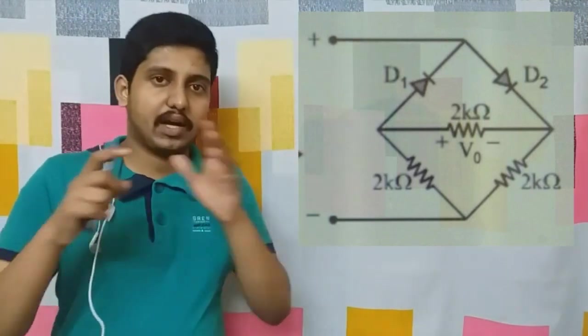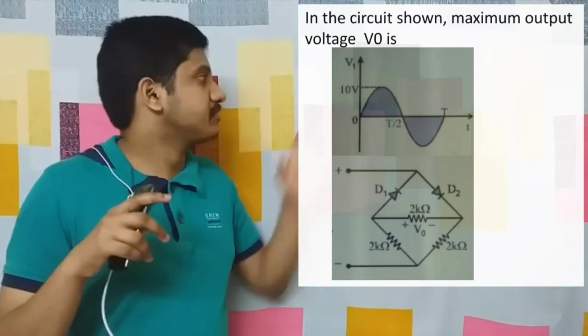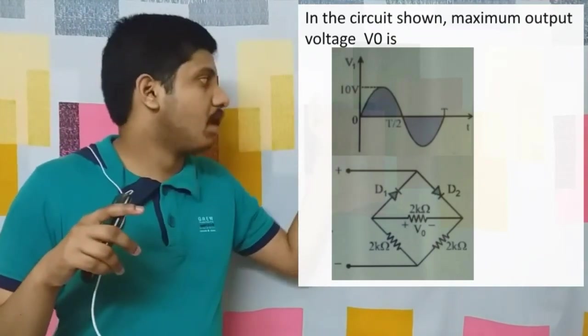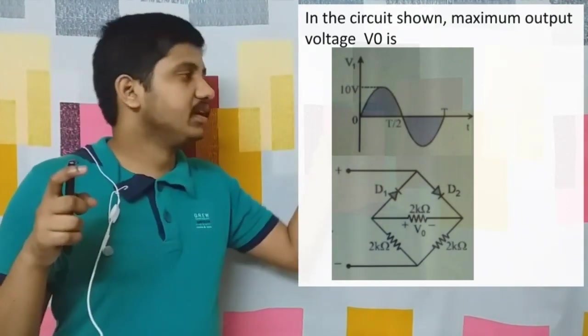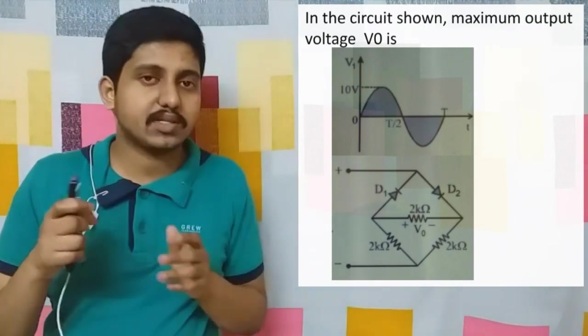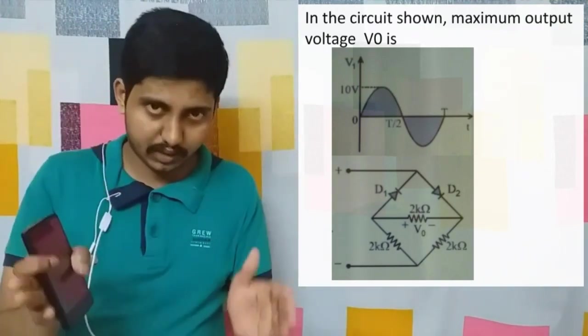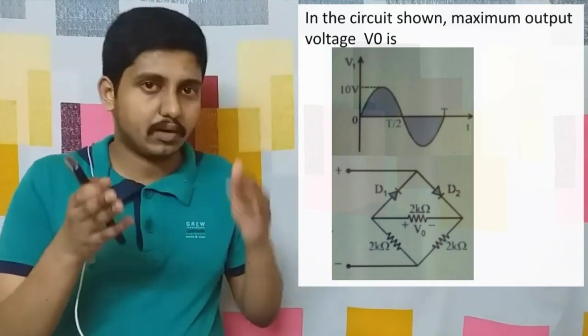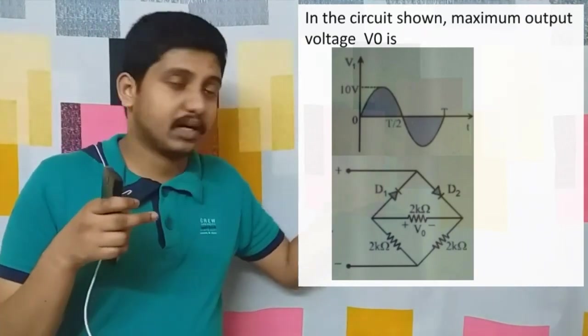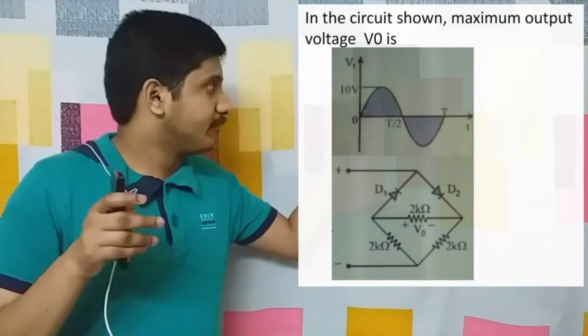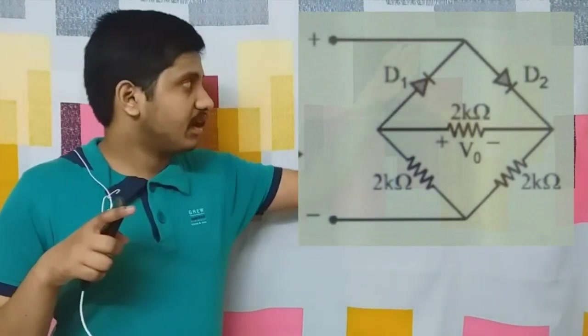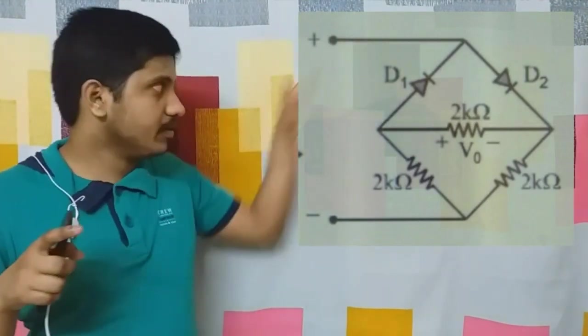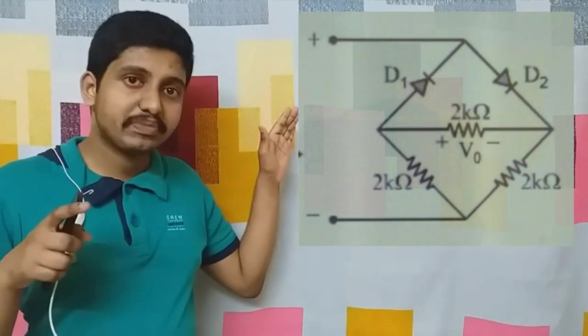We have positive potential upwards. We have to find the maximum output voltage across this 2 ohm resistor. If you are given a circuit containing semiconductors and diodes as well as resistors, what you should do first is find which diode is forward biased and which diode is reverse biased. The diode on the left side is reverse biased, so no need to consider that part.